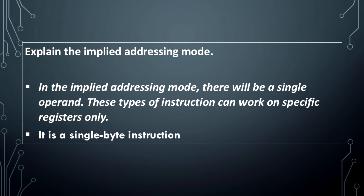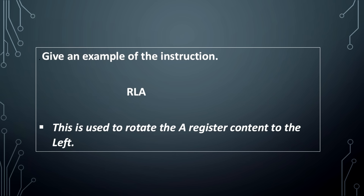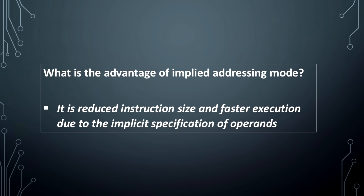In the implied addressing mode, there is a single operand. These types of instructions can work on specific registers only. It is a single-byte instruction. Example: RLA — this is used to rotate the A register content to the left. The advantage of implied addressing mode is reduced instruction size and faster execution due to the implicit specification of operands.